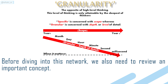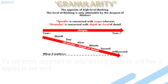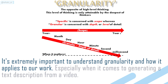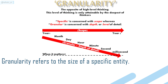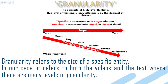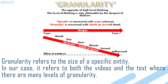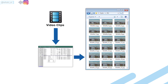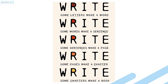Before diving into this network, we also need to review an important concept: granularity. It's extremely important to understand granularity and how it applies to our work, especially when it comes to generating a text description from a video. Granularity refers to the size of a specific entity. In our case, it refers to both the video and the text, where there are many levels of granularity. The video can be referred to as frames, clips, or directly the full video, where words can also be seen as sentences, paragraphs, and even letters.